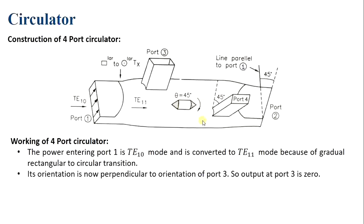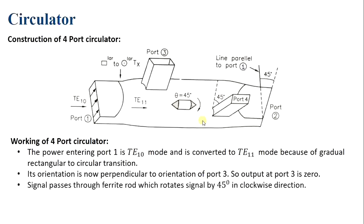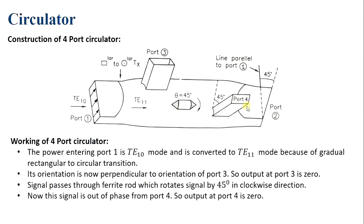The signal then passes through the ferrite rod, which rotates it by 45 degrees in the clockwise direction. This makes the signal out of phase with port 4, so output at port 4 is also zero.